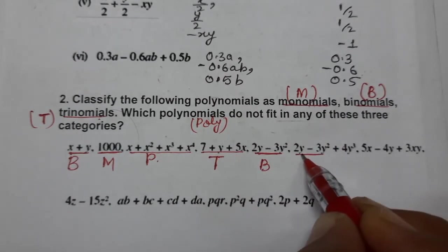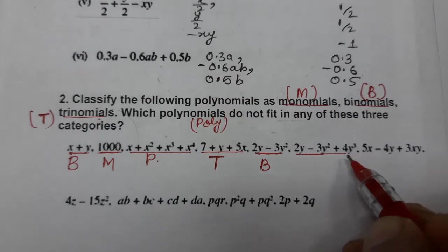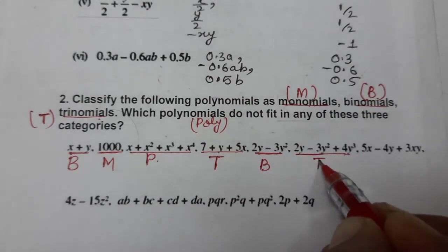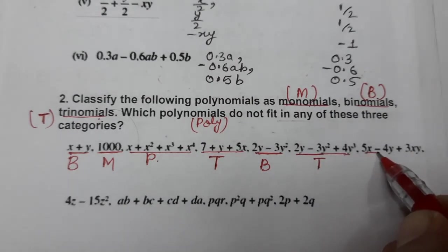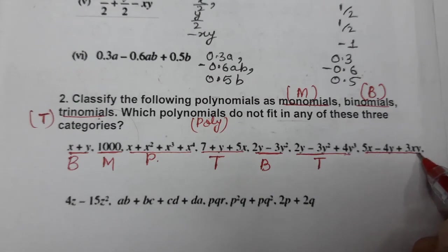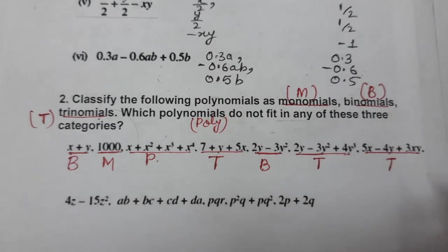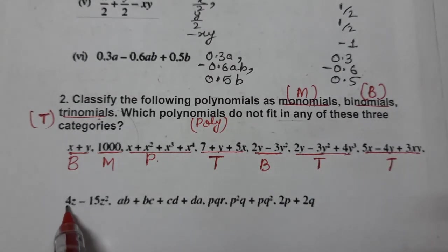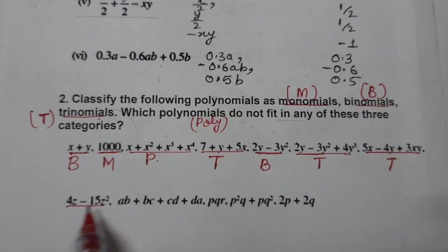2y - 3y² + 4y³, so trinomial again, three terms. 5x - 4y + 3xy, trinomial, three terms. 4z - 15z², two terms are there only. So binomial.